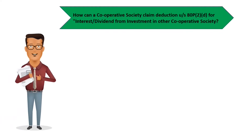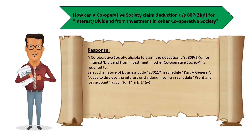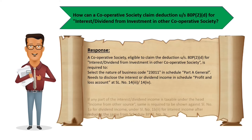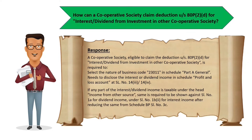Another question related to cooperative societies: how can a cooperative society claim deduction under section 80P subsection 2 clause D for interest or dividend from investment in other cooperative society? A cooperative society eligible to claim this deduction is required to select the nature of business code 23011 in Schedule Part A General. It also needs to disclose the interest or dividend income in Schedule Profit and Loss Account at serial number 14 clause 3 or 14-4. Also, if any part of the interest or dividend income is taxable under income from other sources, the same is required to be shown again at serial number 1A for dividend income and serial number 1B2 for interest income, after reducing the same from Schedule BP serial number 3C.